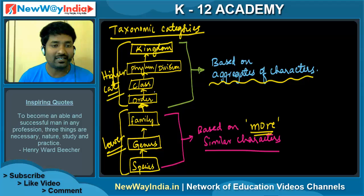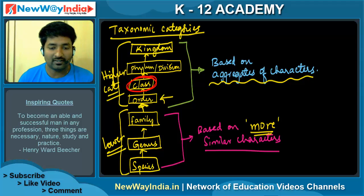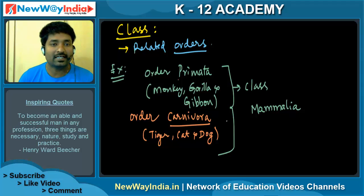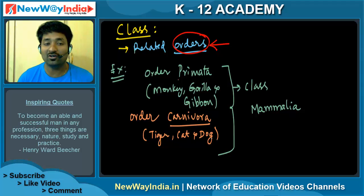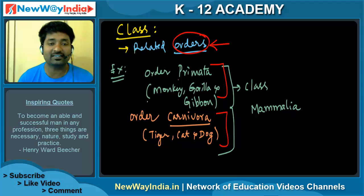The next category is class. Class includes related orders. For example, order Primata — which includes monkey, gorilla, and gibbon — and order Carnivora — which includes tiger, cat, and dog — are different orders with different characters, but they both come under class Mammalia.